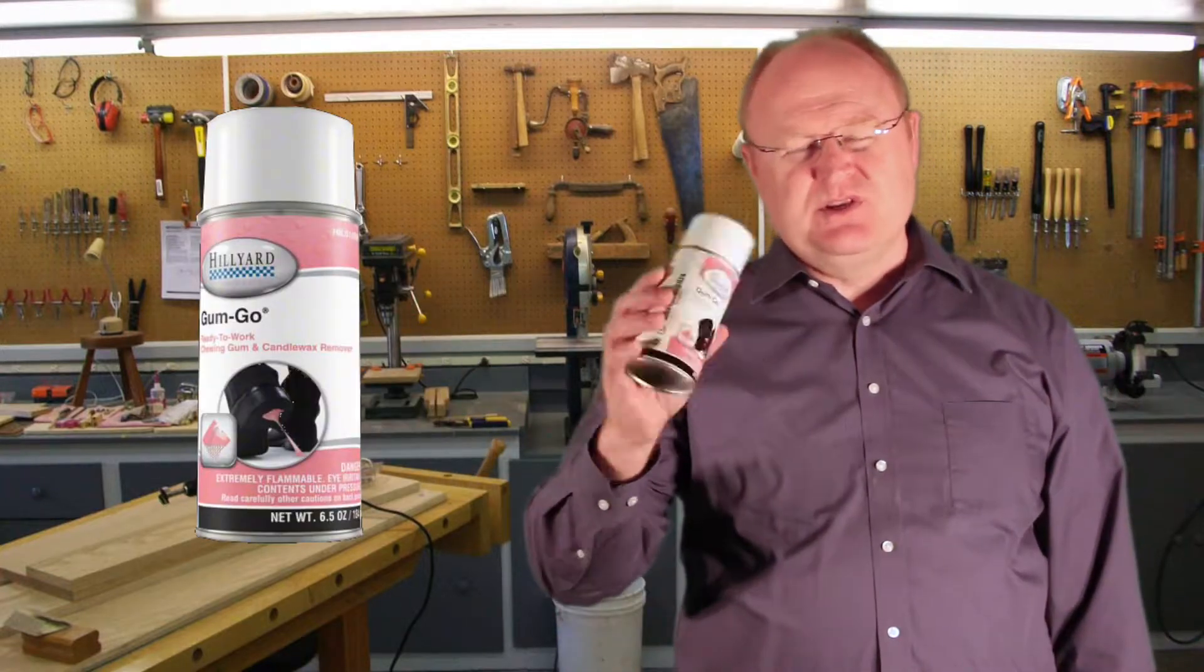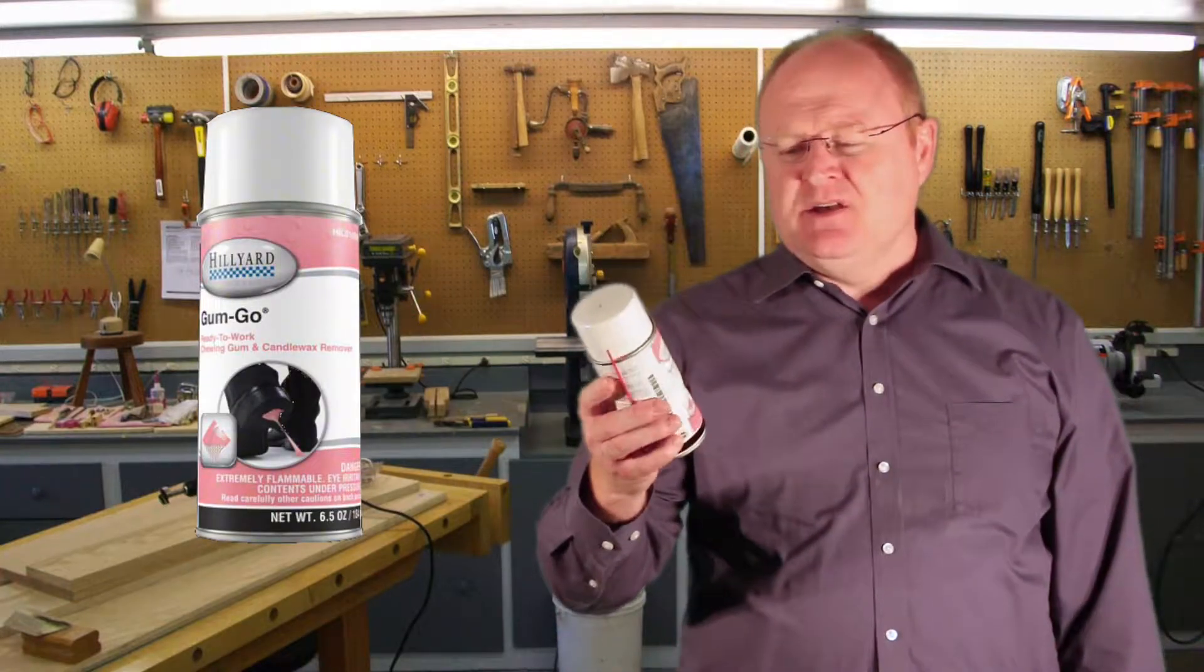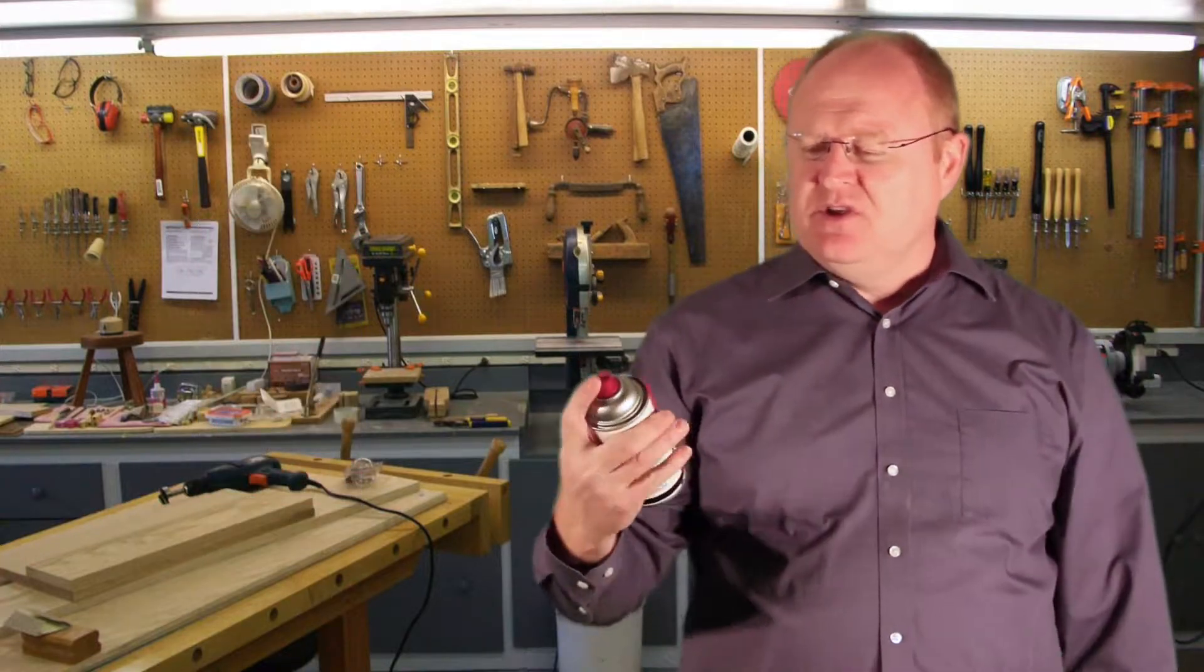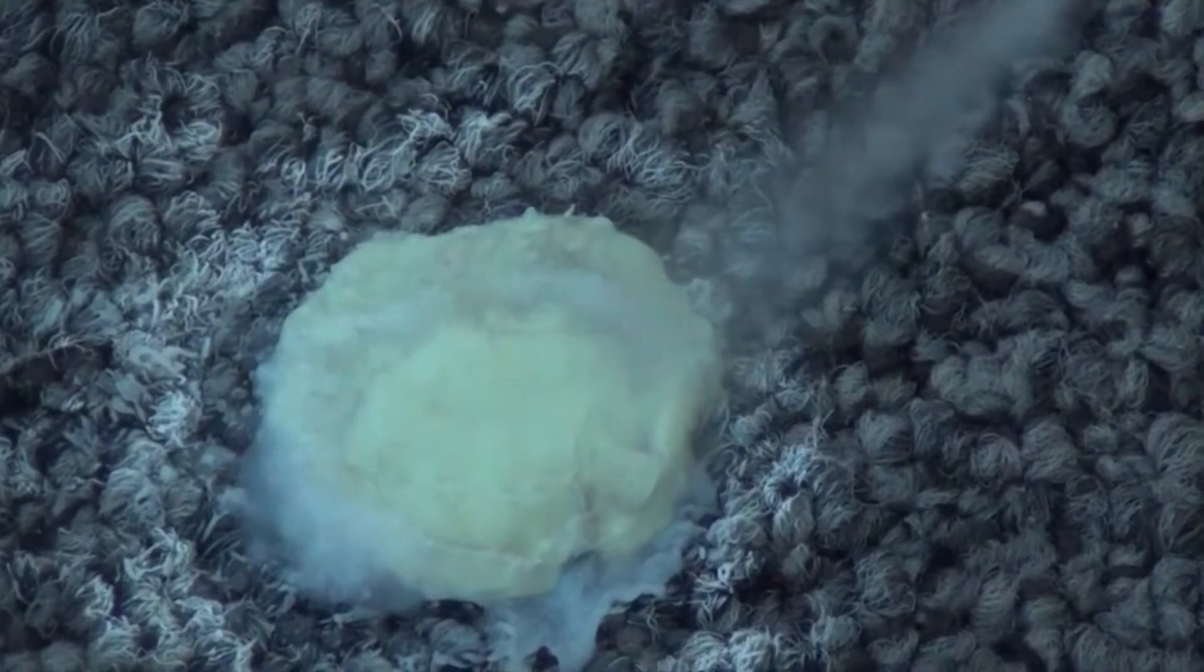One of the tools I want to share with you today is something called Gum-Go, which is what this particular can is called. It's simply an aerosol can where you take the cap off and spray the gum to freeze it.